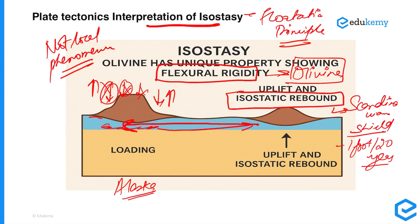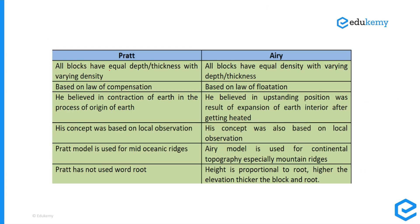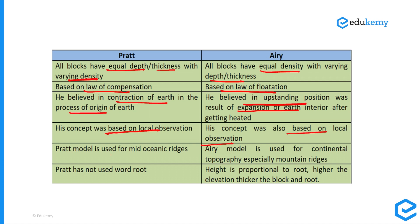A brief comparison between Pratt and Airy: Pratt says all blocks have equal depth and thickness with varying density, while Airy says all blocks have equal density with varying depth and thickness. Pratt's theory is based on the law of compensation; Airy's is based on the law of flotation. Pratt believed in the contraction of the earth over time, while Airy believed the earth expanded due to internal heat pushing upward. Both concepts were based on local real-world observations.